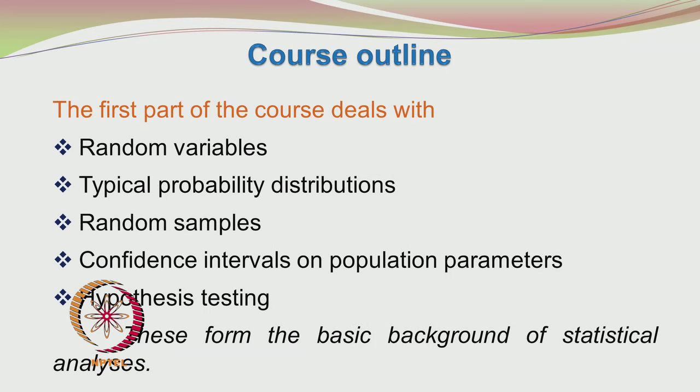The course is divided into two parts. The first part is the fundamental part where you would be exposed to the essential tools required for data analysis and design of experiments. We will start with an introduction to random variables, then look at typical probability distributions — normal or Gaussian distribution, t-distribution, chi-square distribution, and others. Then we will look at random samples, followed by confidence intervals on population parameters and hypothesis testing.